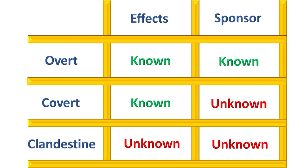Overt operations are conducted openly, without concealment. With an overt operation, the effects and the sponsor are known. Covert operations are planned and executed so as to conceal the identity or to permit plausible denial by the sponsor. With covert operations, the effects are known, but the sponsors are unknown.